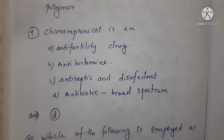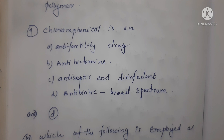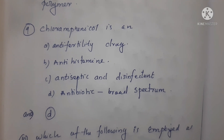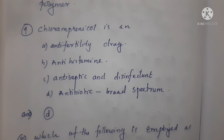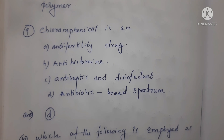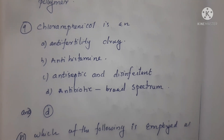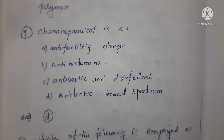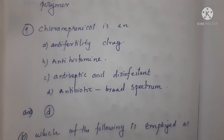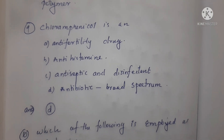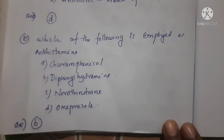Next question: Chloramphenicol is an Option A anti-fertility drug, Option B antihistamine, Option C antiseptic and disinfectant, Option D antibiotic broad spectrum. Correct answer is Option D. Chloramphenicol is a broad-spectrum antibiotic.